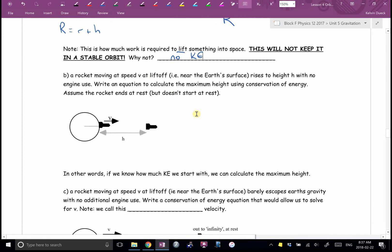Another thing I could do, a rocket moving at speed V at liftoff near the Earth's surface rises to a height H with no engine use. Write an equation to calculate the maximum height using conservation of energy. Let's assume the rocket ends at rest, but it doesn't start at rest. Now, I probably wouldn't phrase it this blatantly in a question, but this is another situation. We would say things like, Zach, is there a change in height? Is there a change in speed? Is there a yucky, curvy force that tells me it's a job for conservation of energy? Specifically, Paige, if they didn't ask me how much work, I would not start out by writing down work. I'd probably start out by writing down conservation of energy. Zach, are we in orbit? No. Okay. So I would start like this. It's kinetic initial plus potential initial equals kinetic final plus potential final.